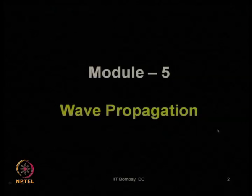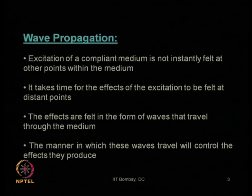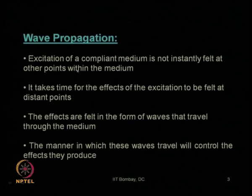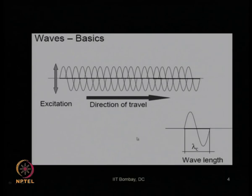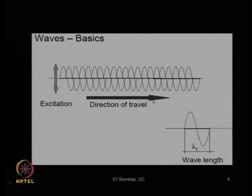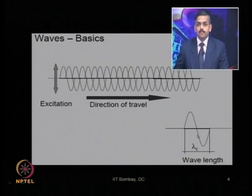A quick recap of what we had learnt in our previous lecture. We have seen what is wave propagation — how waves are generated for any kind of excitation or vibration, and how it travels through a particular media from one point to another. The excitation occurs, then it travels in the form of a wave in that particular media. The direction of travel and the definition of wavelength — the distance required to complete one cycle of the wave — is the wavelength. We also saw that particle motion can be in different directions compared to the direction of movement of the wave.